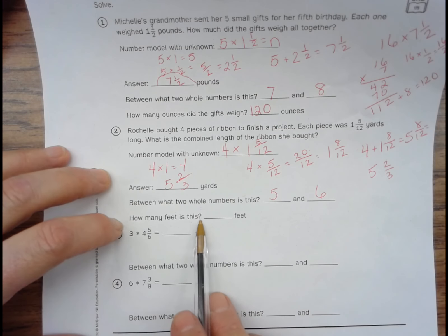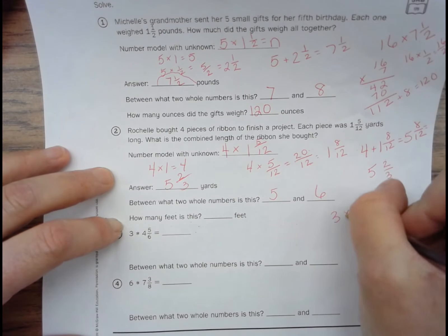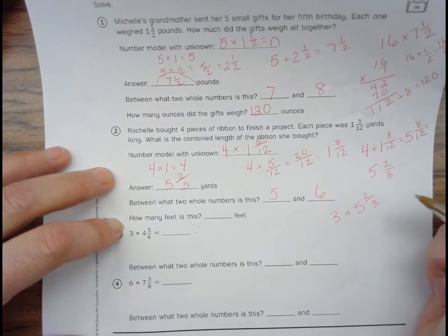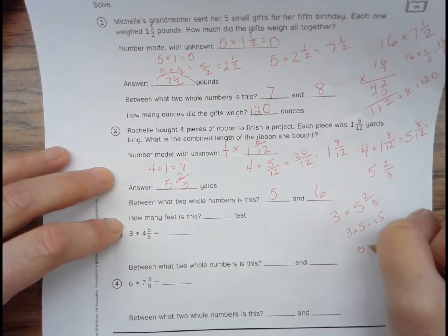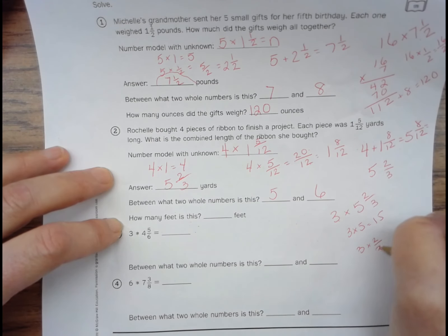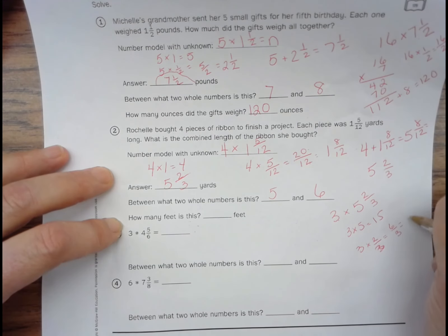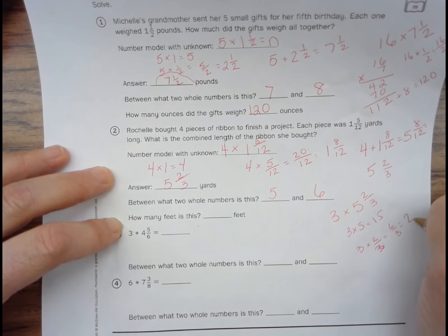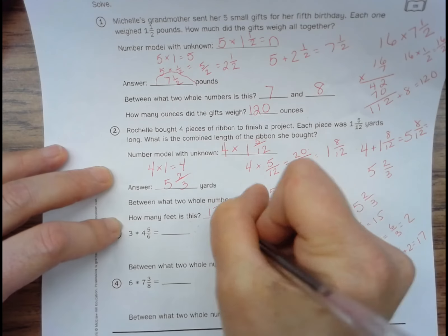So we know that there's three feet in a yard. So we're going to do three times five and two-thirds. Three times five is fifteen. Three times two-thirds equals six-thirds, which equals two. And then fifteen plus two equals seventeen. So it's going to be seventeen feet.